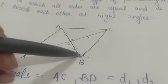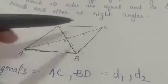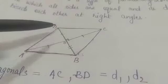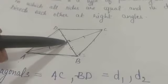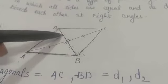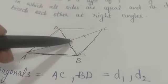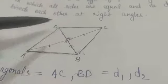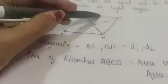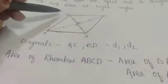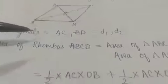The diagonals of rhombus ABCD are BD and AC. These two diagonals bisect each other — that means they divide into two halves and bisect each other at an angle of 90 degrees. In this figure we have diagonals AC and BD, denoted by D1 and D2.